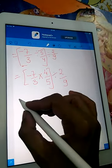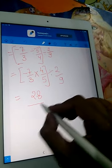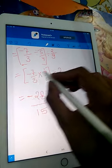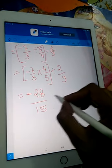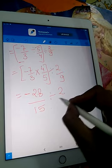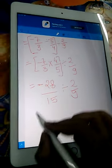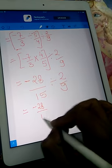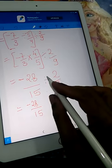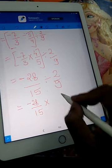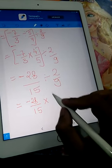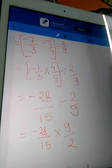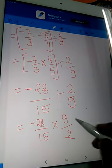7, 4's are 28. 3, 5's are 15. Minus sign is there. Minus into plus gives us minus, divided by 2 by 9. Again, minus 28 upon 15. Division sign changes to multiplication and we write the reciprocal of 2 by 9, that is 9 by 2, so here we will multiply.